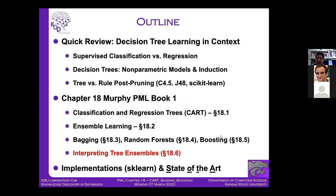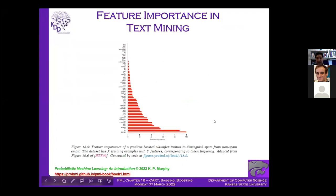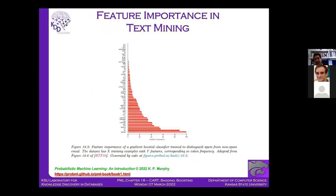Interpreting tree ensembles: Murphy shows two approaches. First, visualize feature importance using a heat map — for a single decision tree, find the gain in accuracy for each feature (univariate gain), shown as color intensity on a grid. For MNIST handwritten digits, this reveals which pixel regions are most discriminative. Second, sort features by importance — for spam detection, this shows the long tail of features that might be pruned to prevent overfitting.